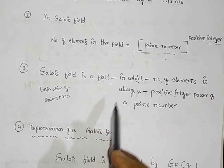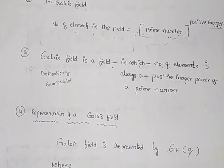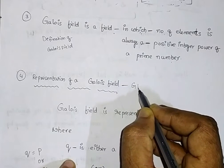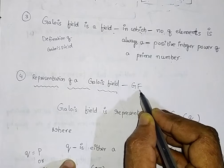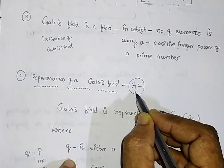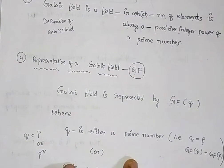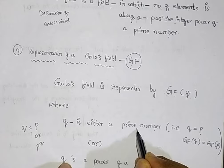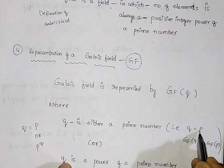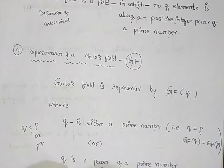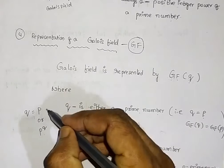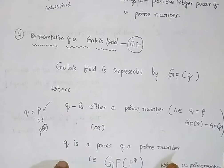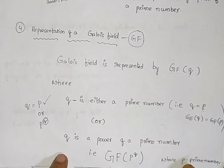The representation of the Galois field uses two letters: GF, where G stands for Galois and F stands for field. The Galois field is represented as GF(q), where q is a prime number — that is, q equals p, which may be a prime number or a power of a prime number, where p is a prime number.